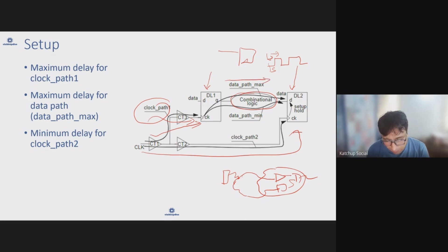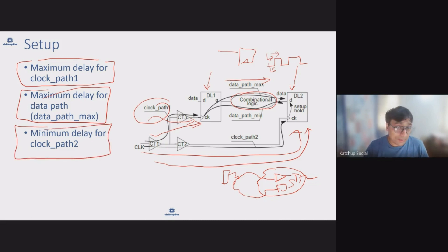And when this receive clock arrives as soon as possible. So in order to do this, what STA tool does is it uses maximum delay for clock path one, which is on the launch clock, uses maximum delay for data path, and you can have multiple paths so it will use the delay which is maximum. And on the capture side it will use minimum delay for clock path because that will make it the worst case.